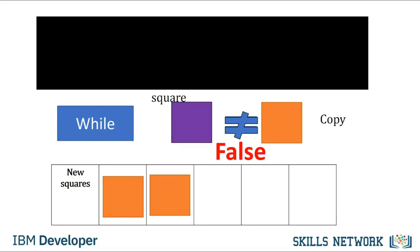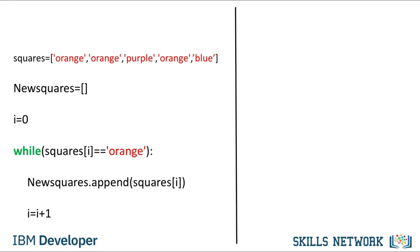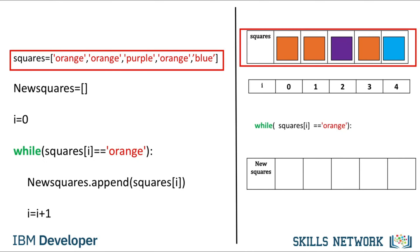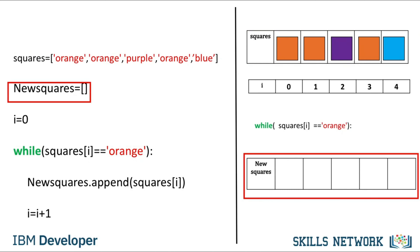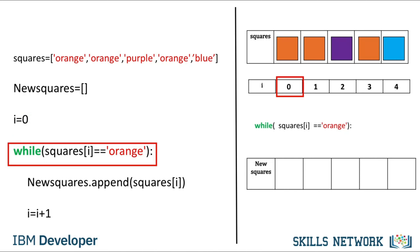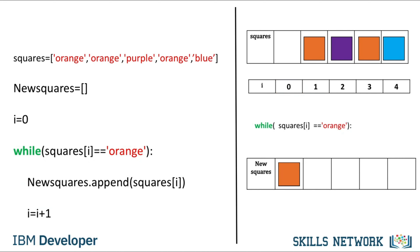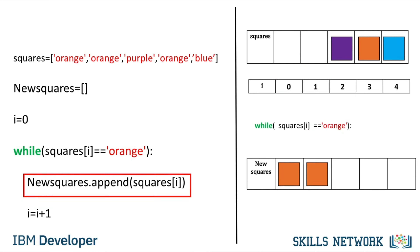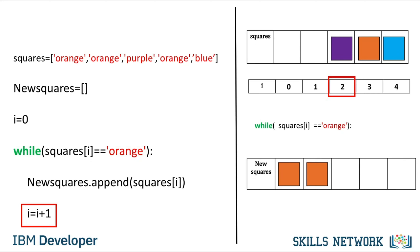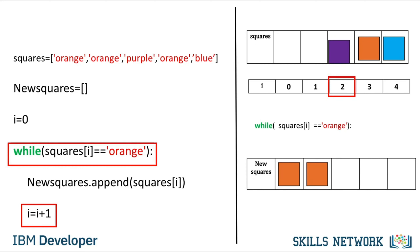This is essentially what a while loop does. We use a list with the names of the colors to represent the squares. We create an empty list of new_squares and start the index at 0. The while statement will repeatedly execute the statements within the indent until the condition is false. We append the first element of squares to new_squares and increase i by 1. We append the second element, then increment i. Now the value in the array is purple, so the condition for the while statement is false and we exit the loop. Check out the labs for more examples.